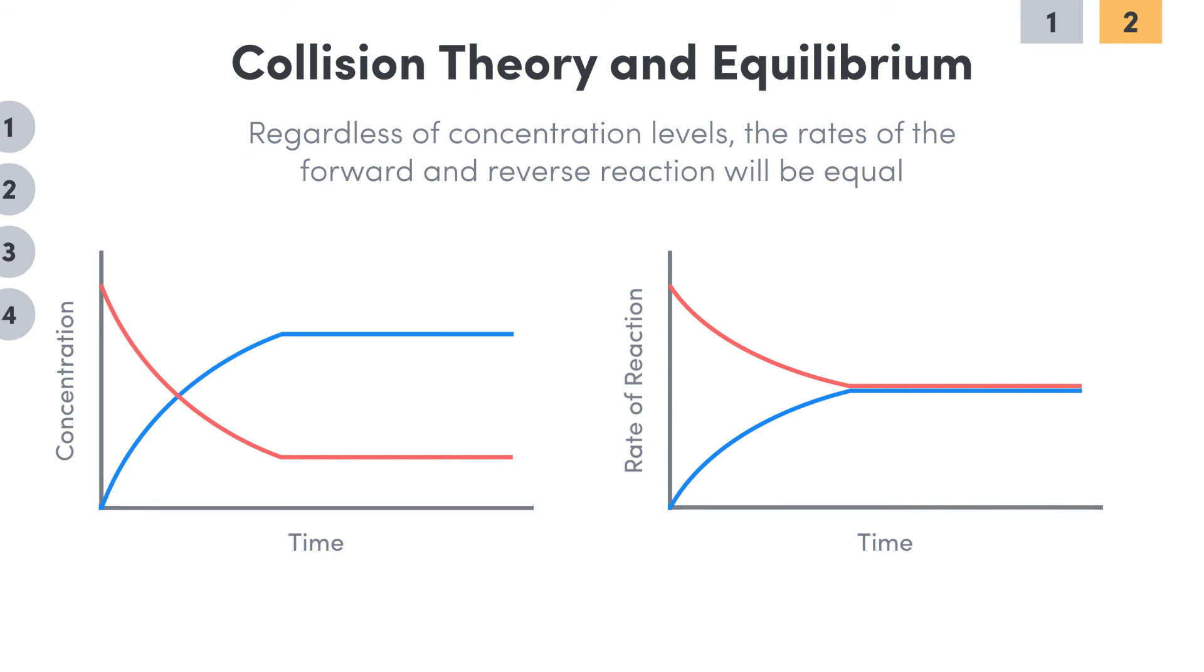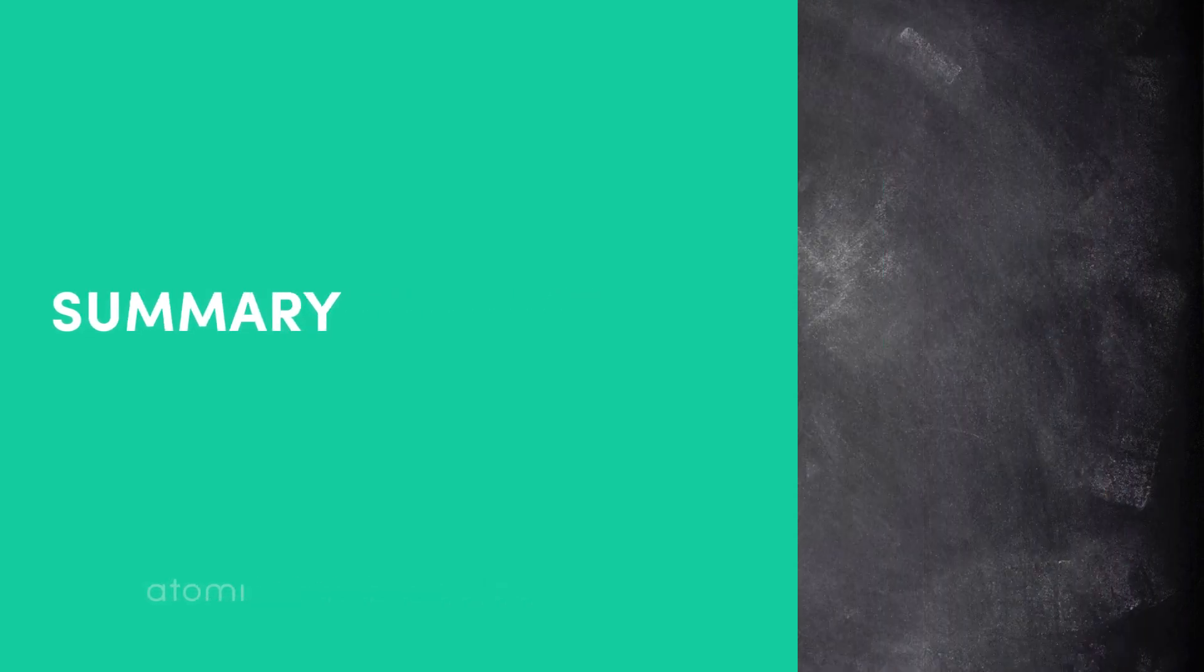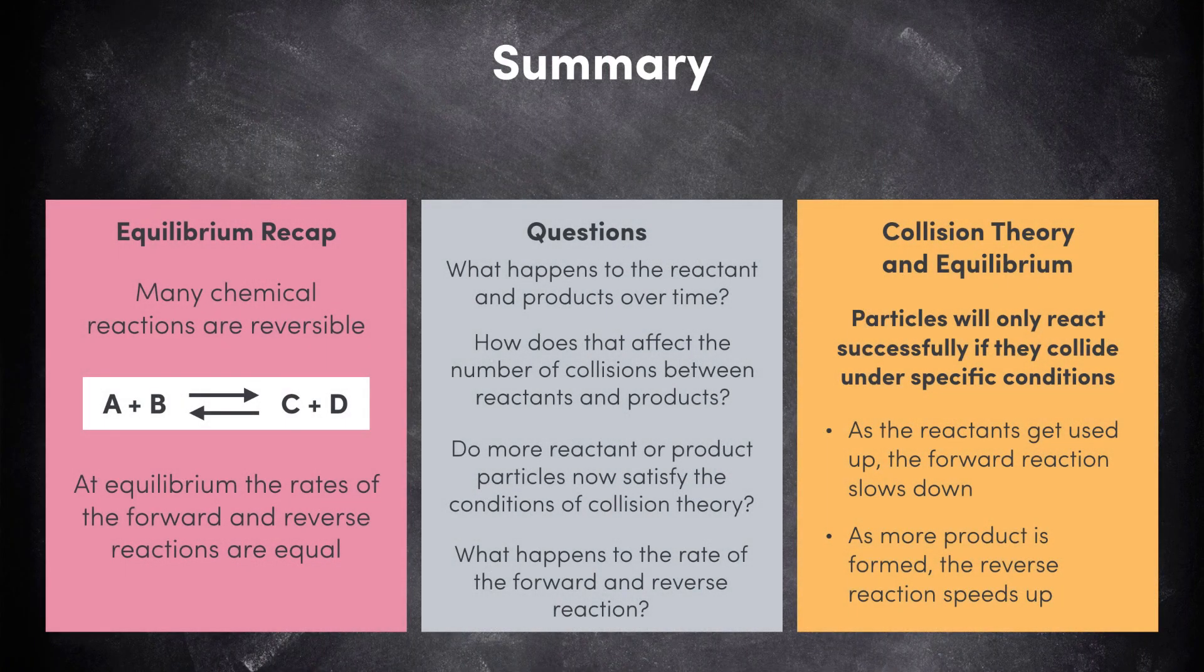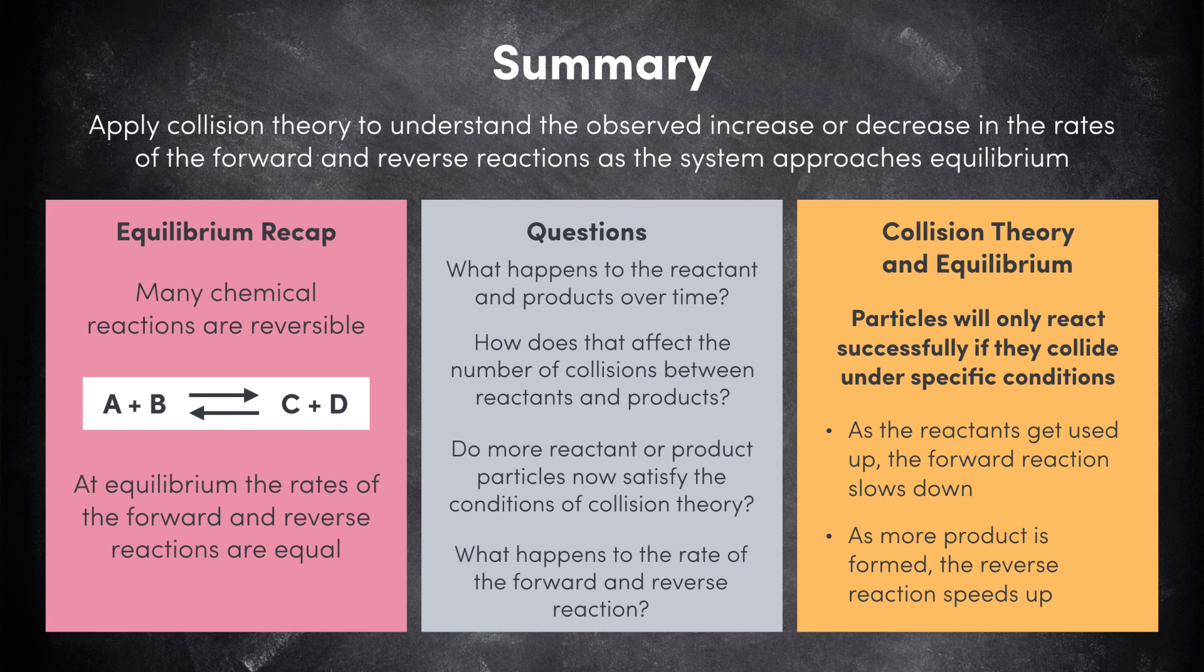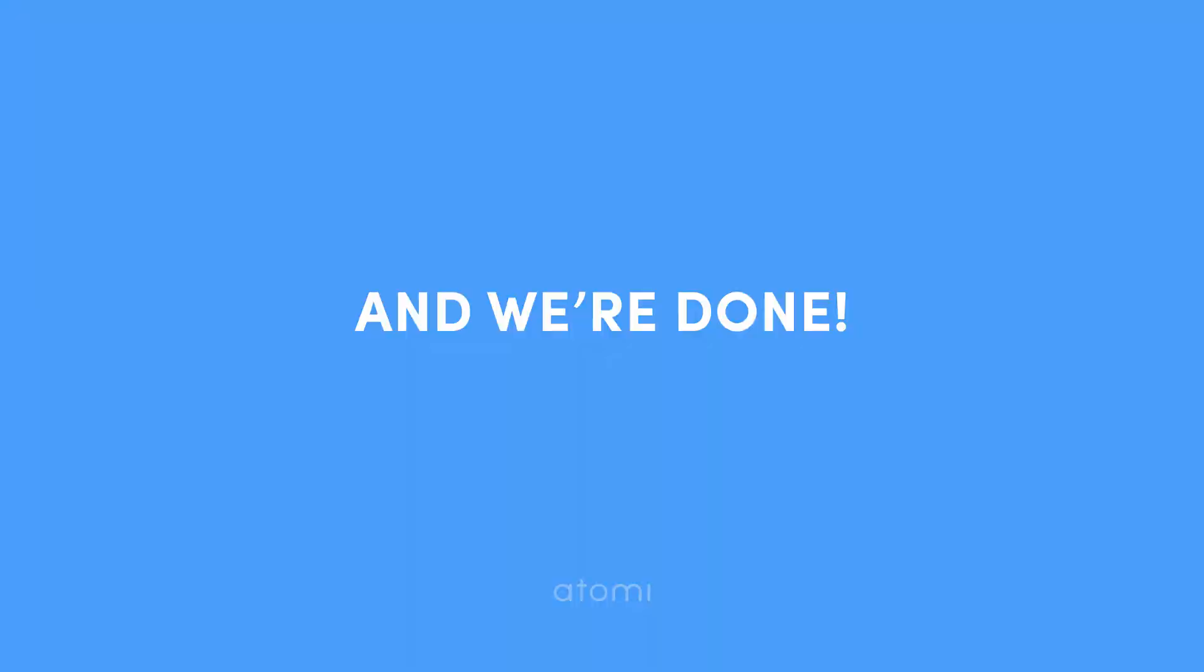Okay guys, that brings us to the end of this video. I'll pop on screen now the main points to take away from all this, but essentially all we've done is apply collision theory to understand the observed increase or decrease in the rates of the forward and reverse reactions as the system approaches equilibrium. Anyway, that's it from me. I'll speak to you guys in the next one.